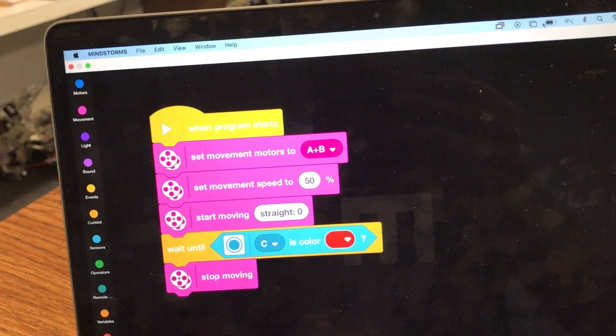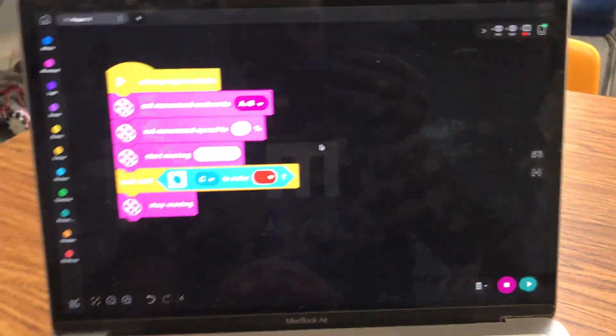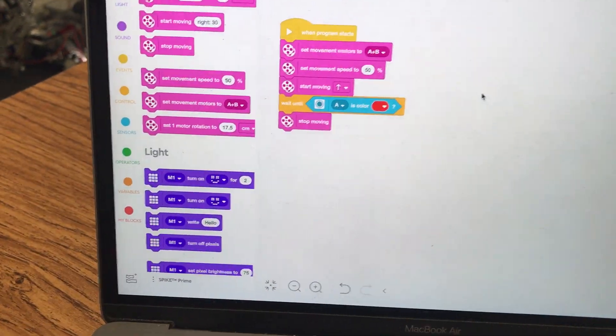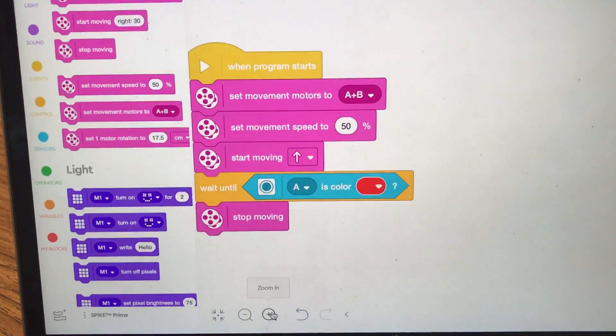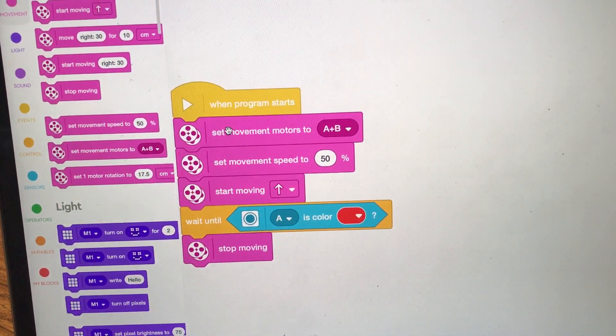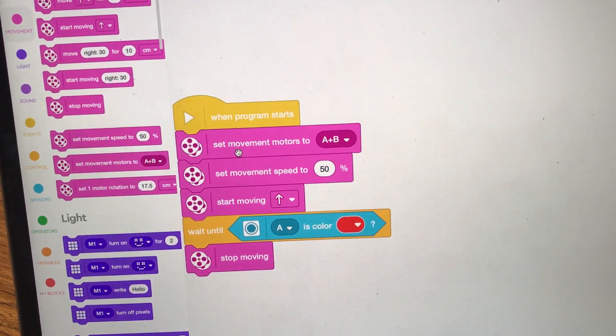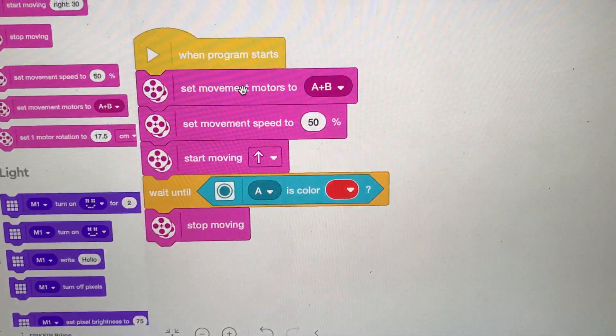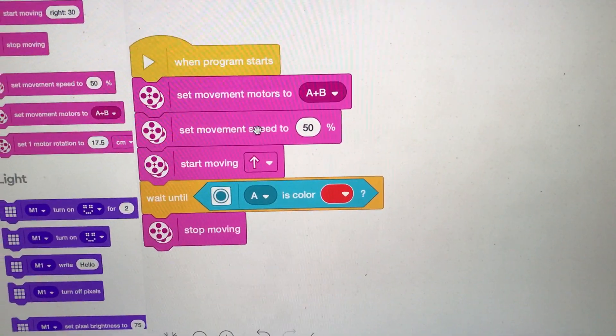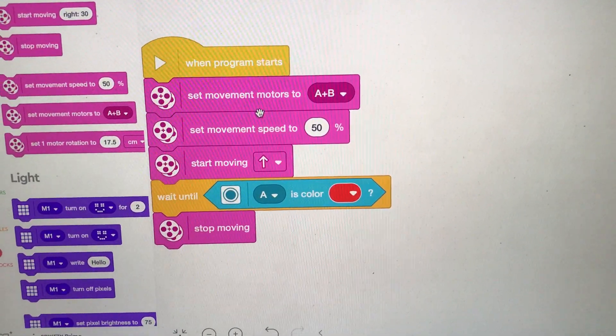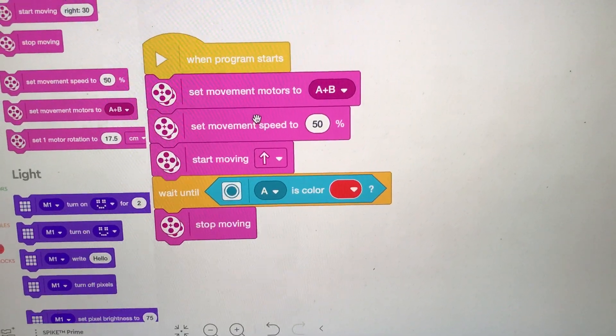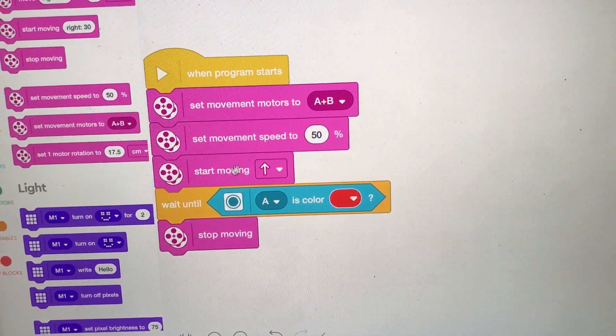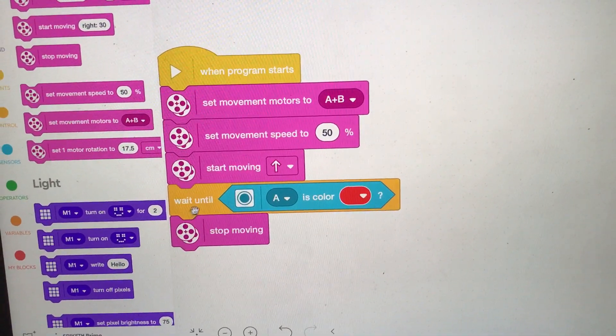Alright, so that code is using the Lego Mindstorms Inventor software, but you can do the same thing with a Spike Prime kit and the code is almost identical. Set the when the program starts, set the movement motors to whatever your movement motors are, set the movement speed. Again, those two aren't totally necessary but they are helpful, sort of a good practice to get into.